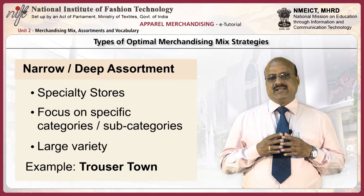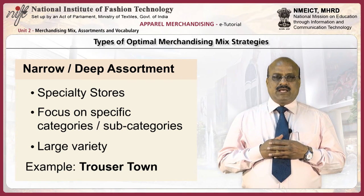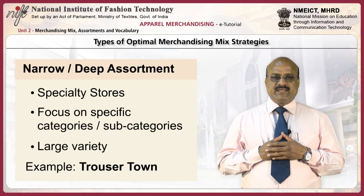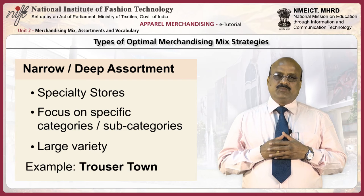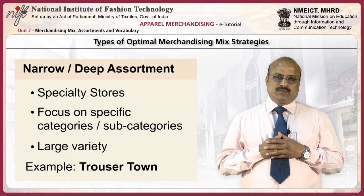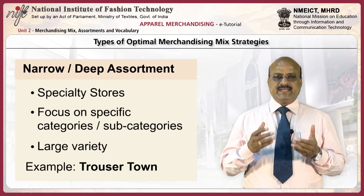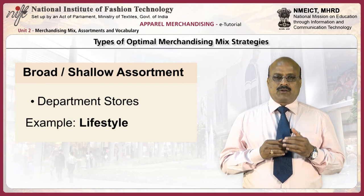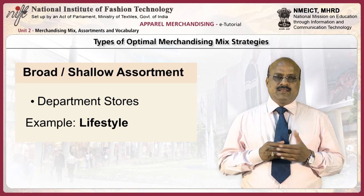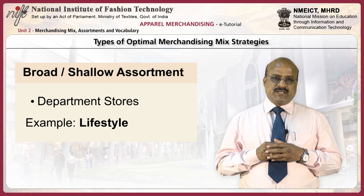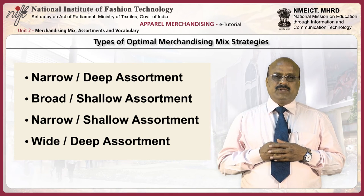Narrow and deep assortments are generally found in specialty stores. They focus on a specific category or subcategory but keep a lot of variety. For example, a Trouser Town store focuses on trousers only but keeps a lot of variety in trousers. Broad or wide and shallow assortments are generally followed by department stores, for example stores like Lifestyle etc.